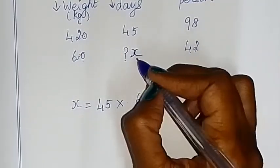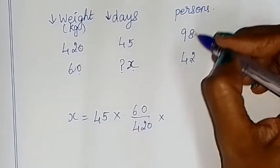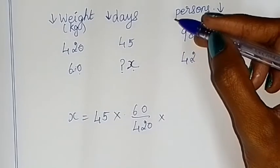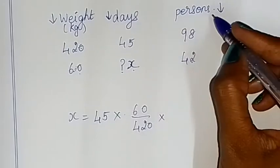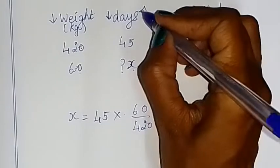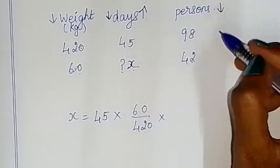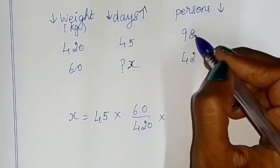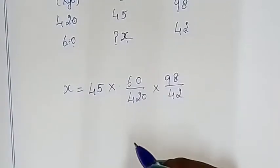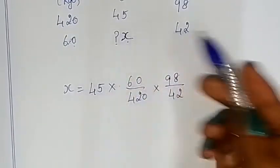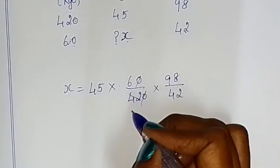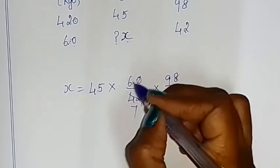Number of persons: if we decrease the number of persons, the rice will last more days — inverse proportion. So 98 by 42: simplify 42 and 6 — 6 sevens are 42, so 42 divided by 6 is 7.